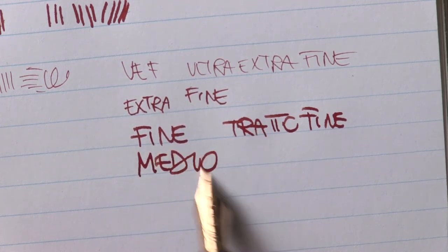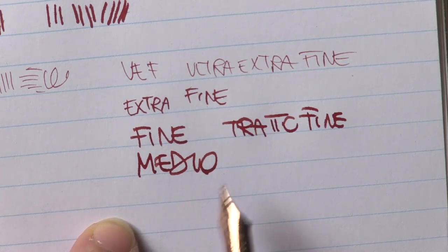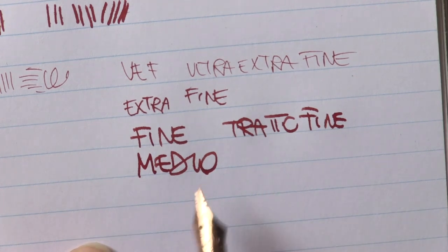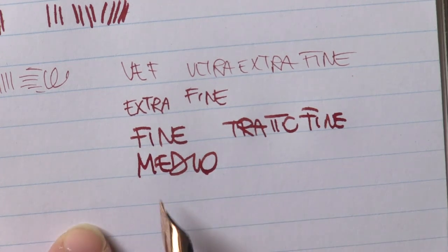See how it is. It is an ultra fine nib when I write in reverse, then it becomes a fine stroke, then a medium, and finally a broad.